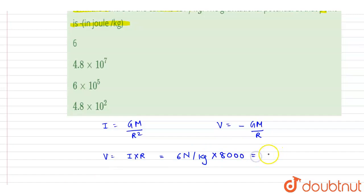So it will be in kilometers, so it is 4.8 into 10 to the power 7 joule per kilogram. And this is the answer.